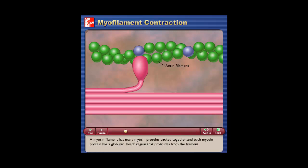A myosin filament has many myosin proteins packed together, and each myosin protein has a globular head region that protrudes from the filament.